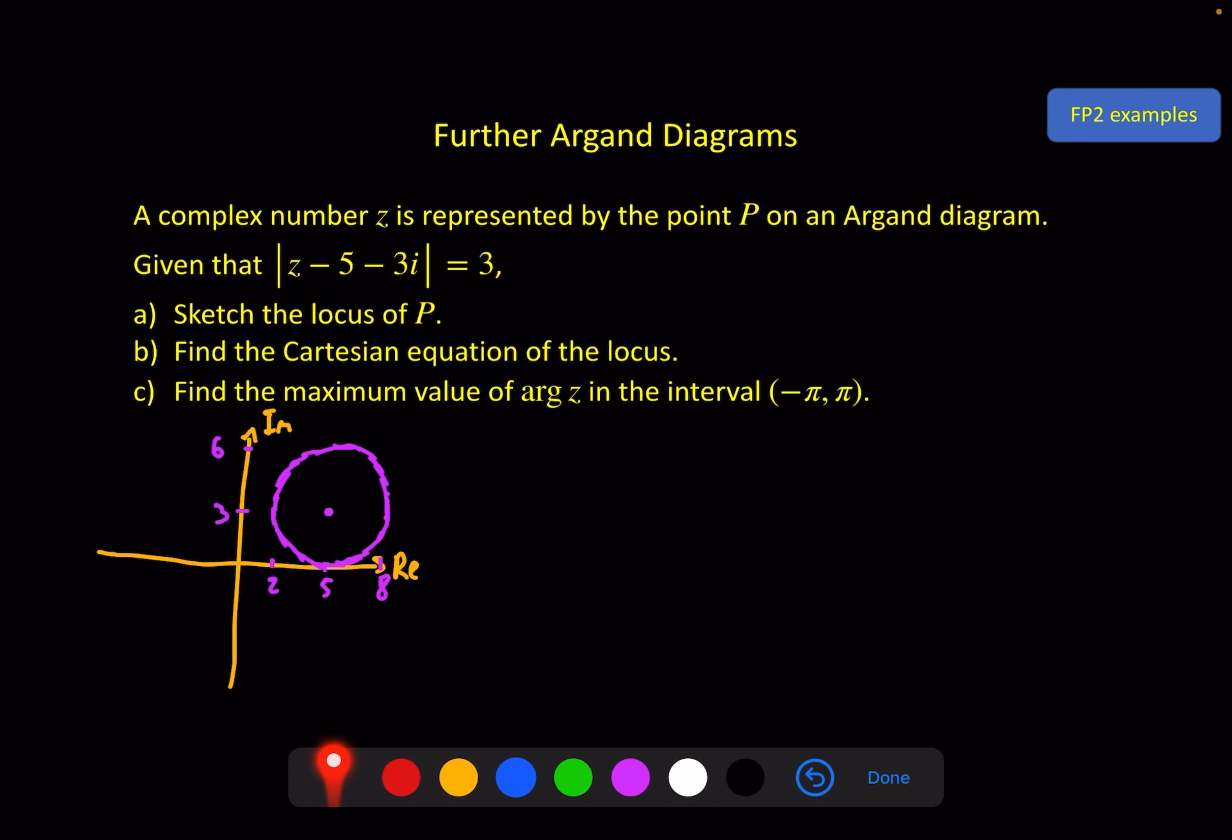Part b, find the Cartesian equation of the locus. We could, as always, use the standard method of putting in x + yi here, collecting real and imaginary parts, getting rid of the modular symbol and then rearranging it. But because this is a circle, we know the center, we know the radius, you should just be able to write this down. We've got (x - 5)² + (y - 3)² equals the radius squared, which is 9.